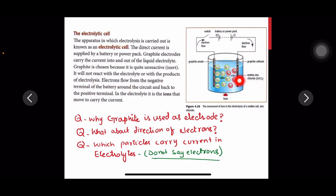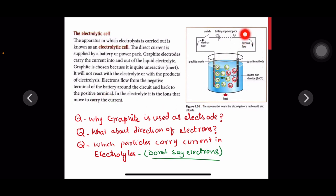Electrons flow from the negative terminal of the battery, around the circuit, and back to the positive terminal. The current is carried by electrons in external wires and by ions in the solution.